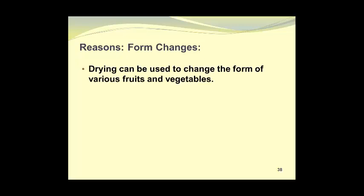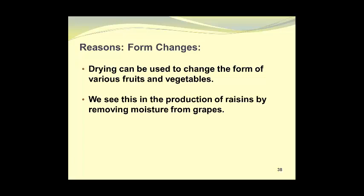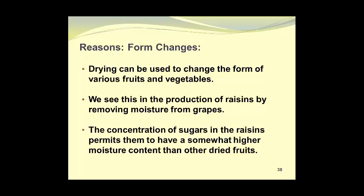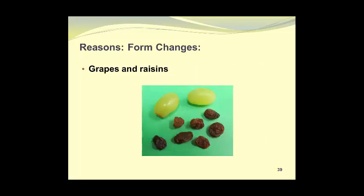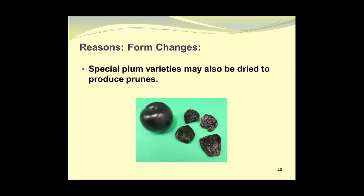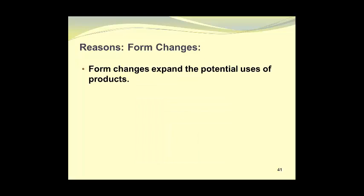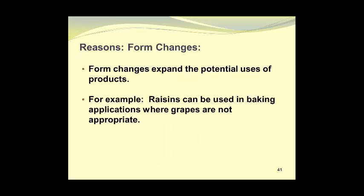Let's take a look at some form changes. Drying can be used to change the form of various fruits and vegetables. We see this in the production of raisins by removing moisture from grapes. The concentration of sugars in the raisins permits them to have a somewhat higher moisture content than other dried fruits. The grapes at the top of the photograph are plump and full of moisture, while the raisins, which have been prepared by drying grapes, are more shriveled and smaller in size. Special plum varieties may also be dried to produce prunes. Form changes expand the potential uses of products — for example, raisins can be used in baking applications where grapes are not appropriate, and this is often done in the case of muffins and loaves and things of this nature.